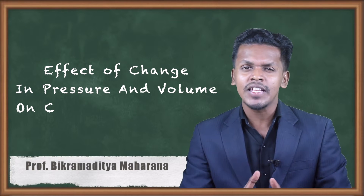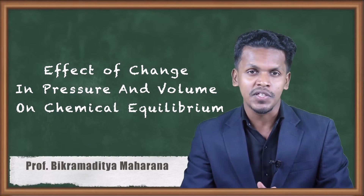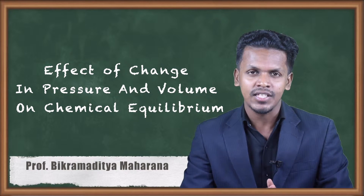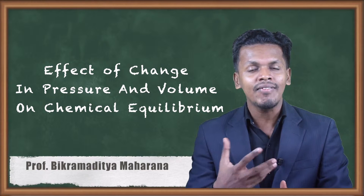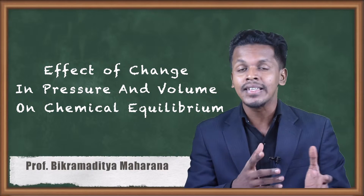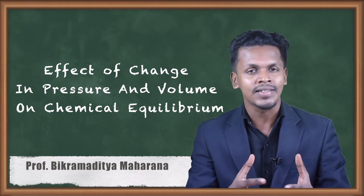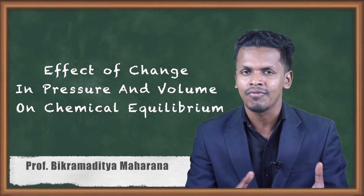Hello friends. In the previous lecture we have understood about Le Chatelier's Principle, and in that case we got to know that whenever at chemical equilibrium we apply certain kinds of parameters — like pressure, volume, temperature, or concentration — we could find a change where the reaction could be turned into a forward reaction or a backward reaction.